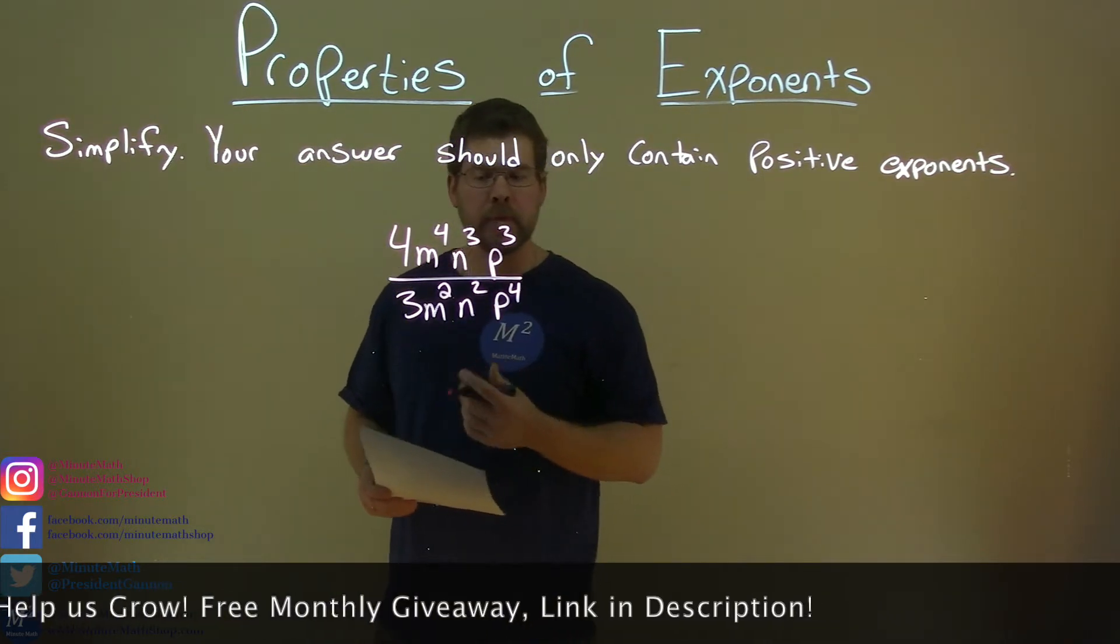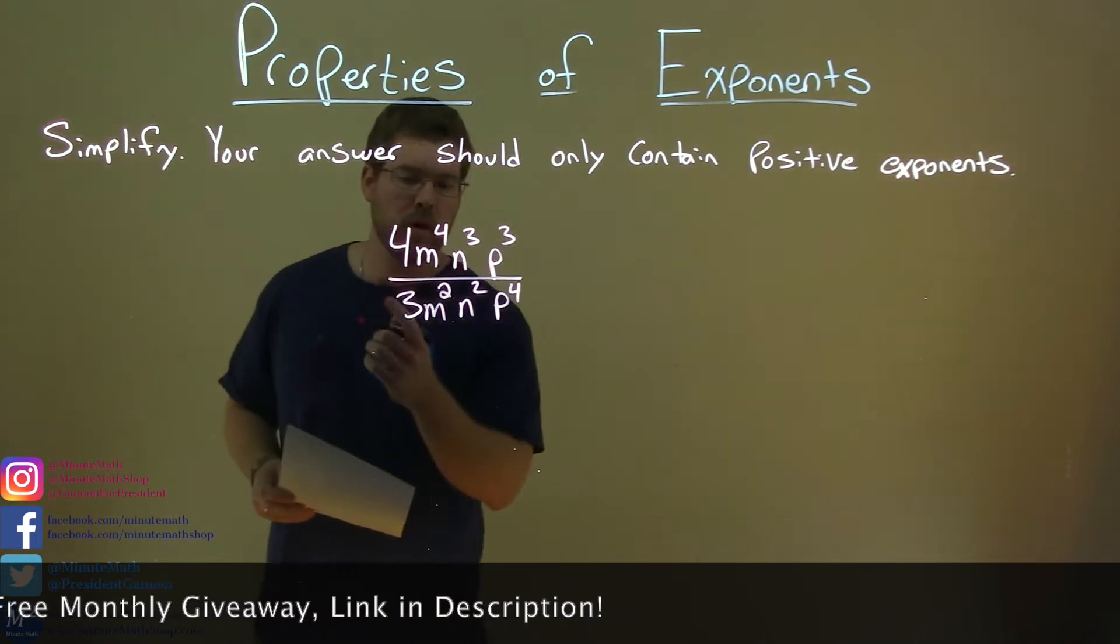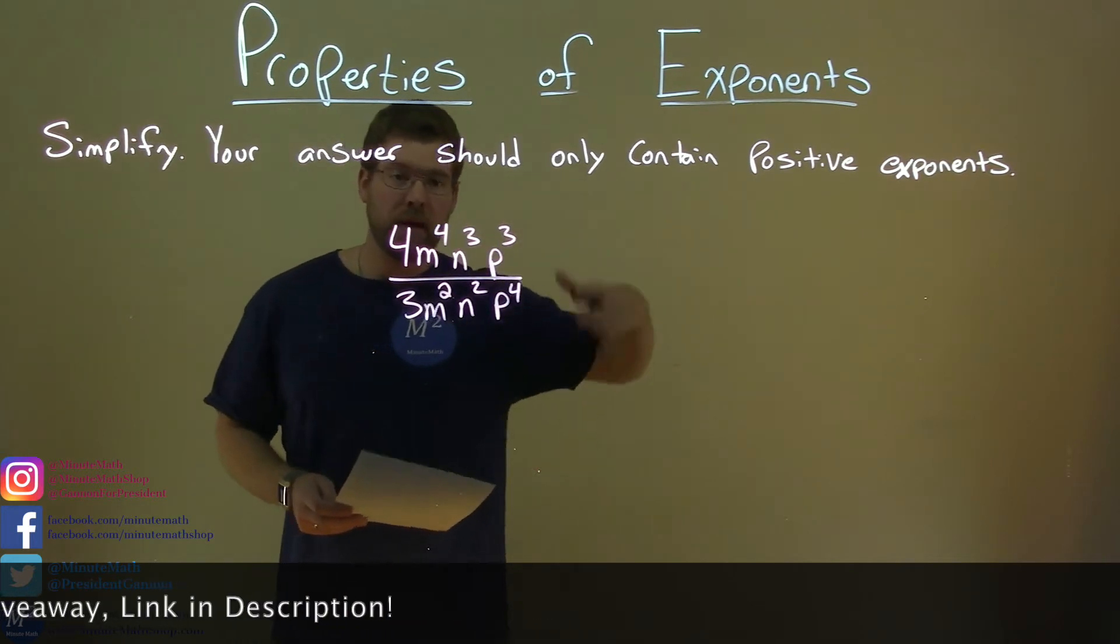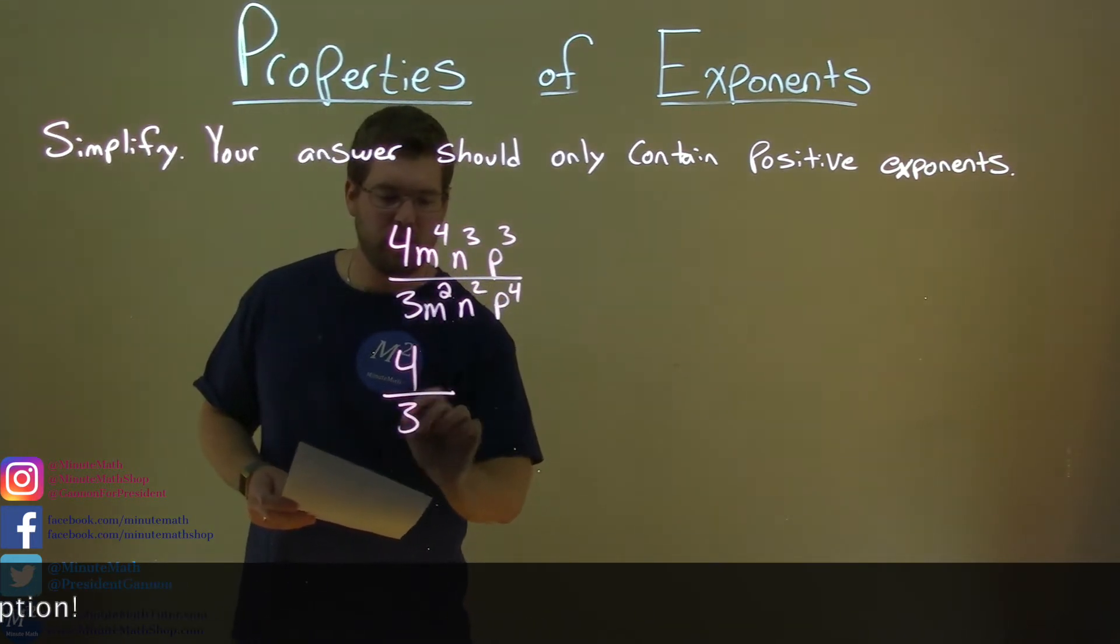So what do we do here? Look at the coefficients first. 4 divided by 3, nothing to simplify, keep it as such, 4 over 3.